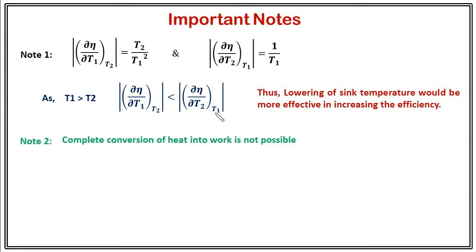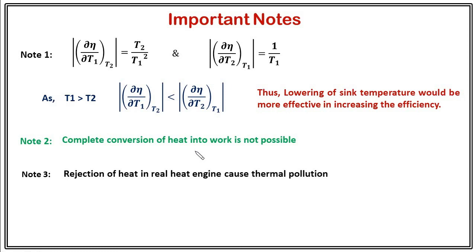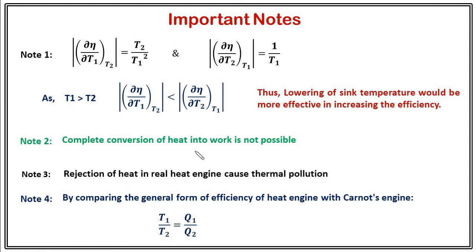The second note is that complete conversion of heat into work is not possible because it is not possible to achieve absolute zero temperature. As T2 cannot be zero, there will always be a finite term, so efficiency will always be less than 1. The third note is that in real engines, there will be rejection of heat and that will cause thermal pollution. The fourth note: comparing the general efficiency Eta = 1 minus Q2/Q1 with the Carnot efficiency 1 minus T2/T1, we can write T1/T2 equals Q1/Q2.